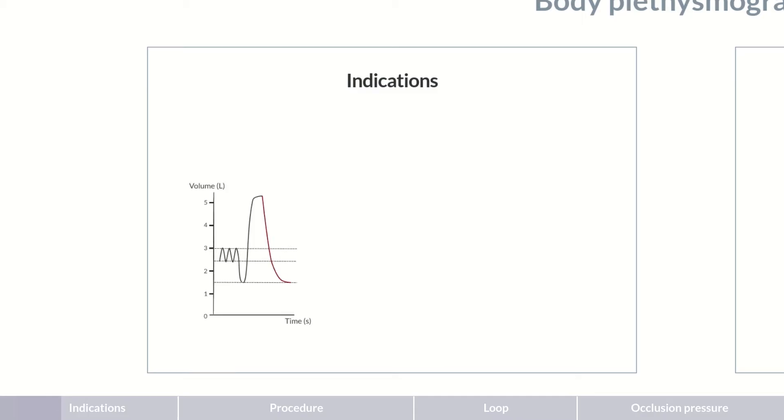Obstructive lung diseases can be determined by spirometry. Here, the FEV1 value and forced vital capacity are measured and their ratio determined, resulting in the FEV1 to FVC ratio. In obstructive diseases, the FEV1 value is reduced.